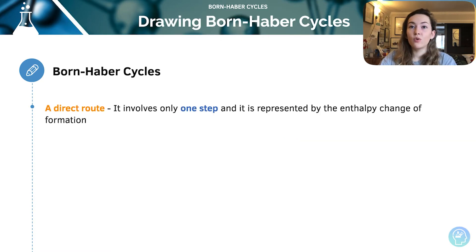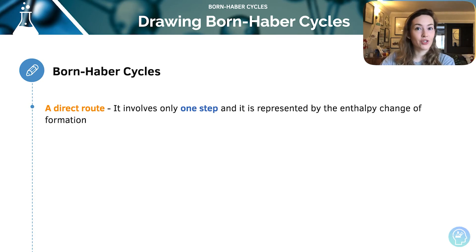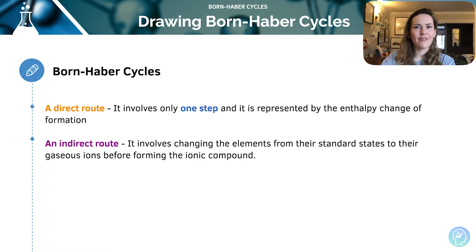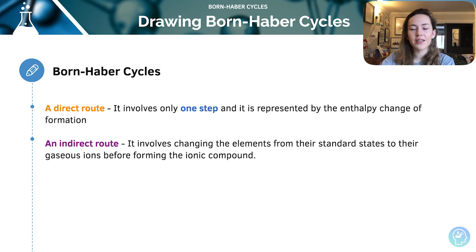With a Born-Haber Cycle, there will be one clear direct route involving only one step from reactants to products — in a Born-Haber Cycle, it's always the enthalpy change of formation. And of course, there is an indirect route, which can be very long. It involves changing the elements from their standard states to their gaseous ions before forming the compound. There are quite a few steps involved, and this is where all those definitions come into play.